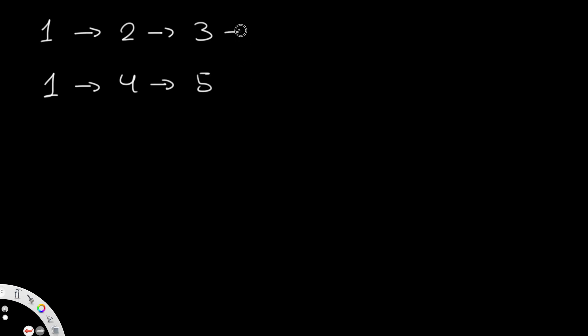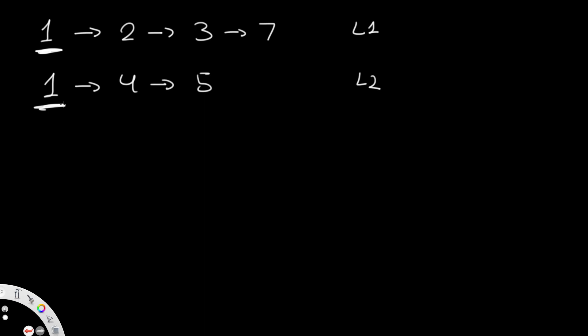Now let's look at our solution. We have two linked lists: L1 is 1→2→3, and L2 is 1→4→5→7. Both are individually sorted. We're going to be given the head node for L1 and the head node of L2. To solve this, we're going to start off with something called a dummy node — a node that acts as a placeholder with no real value, just a starting anchor for our result.